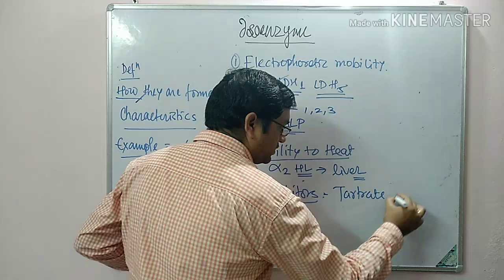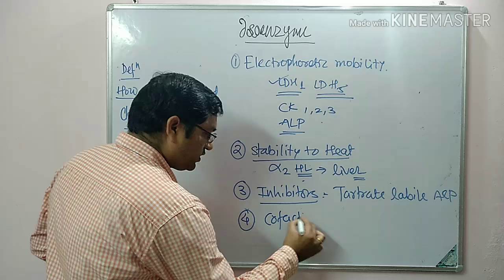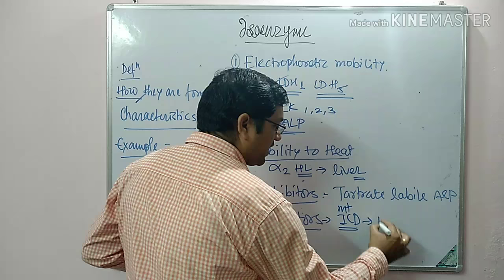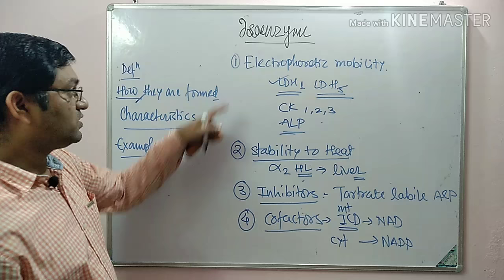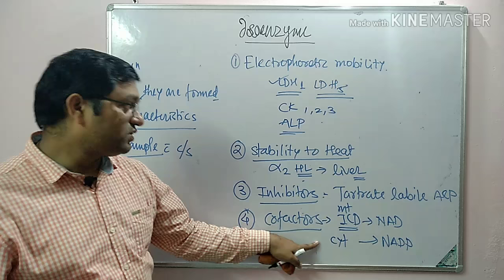The fourth characteristic is cofactors — different isoenzymes require different cofactors. For example, isocitrate dehydrogenase: the mitochondrial variant requires NAD as a cofactor, while the cytosolic variant requires NADP. So characteristics include electrophoretic mobility, stability to heat, sensitivity to inhibitors, and different cofactors required.